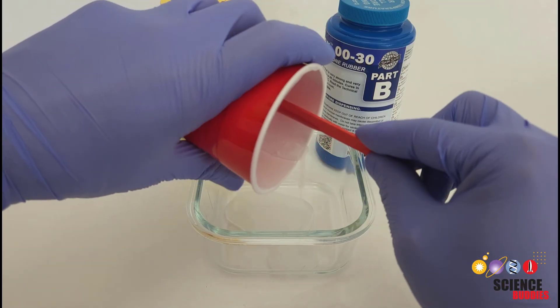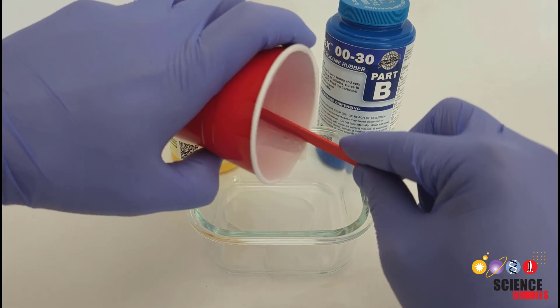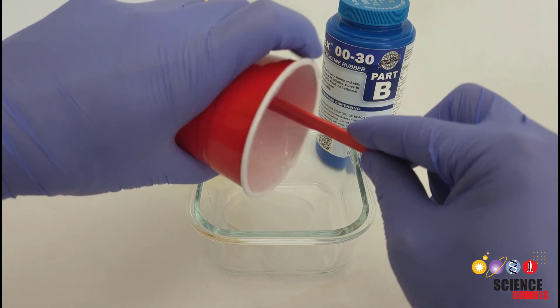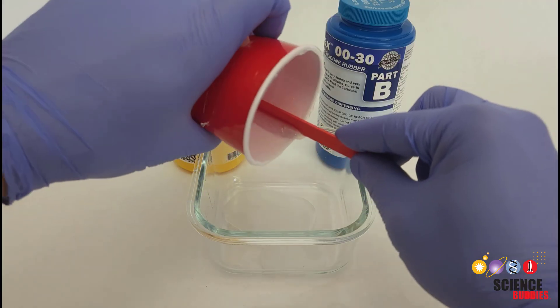Then we're going to come back and put in the layer of conductive fabric before mixing another batch of silicone and pouring it on top to form the top layer.